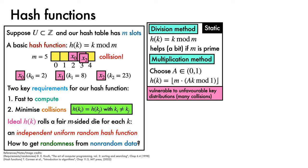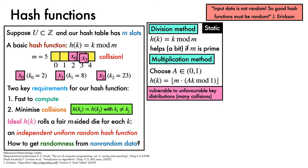Unfortunately, static hash functions are vulnerable to unfavourable key distributions, either from mischievous adversaries or bad luck, in which many collisions occur, ruining the hash table performance. The essence of our way out of this problem, as observed by Ericsson, is to remember that input data is not random, so good hash functions must be random.